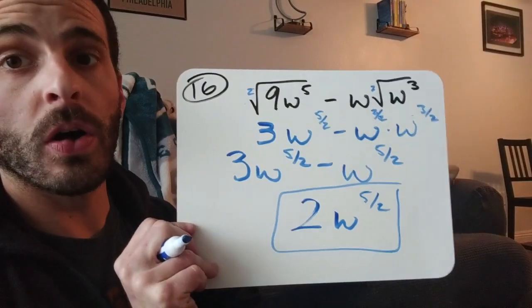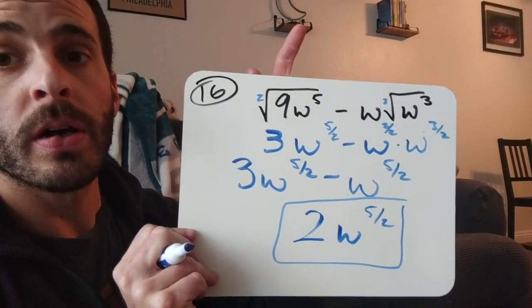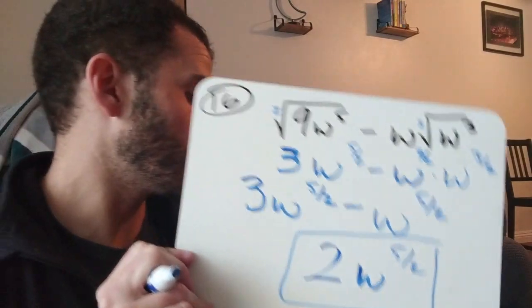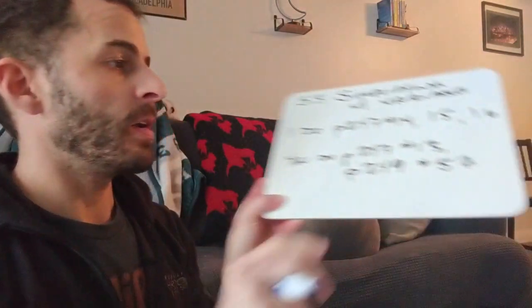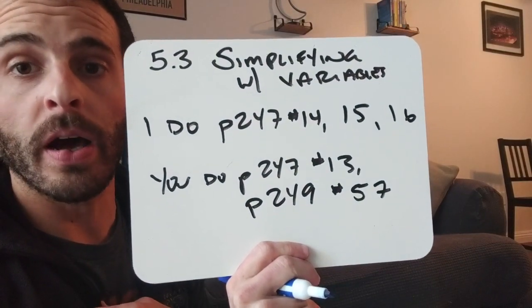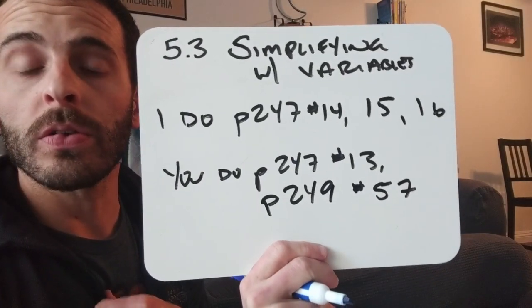So, simplifying when possible, converting to a rational exponent in this case helped. Alright, so go ahead and try number 13 on page 247, and number 57 on page 249, and see what rules you're going to use for those.